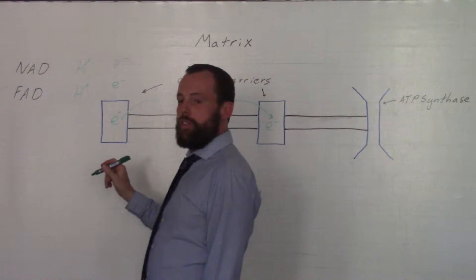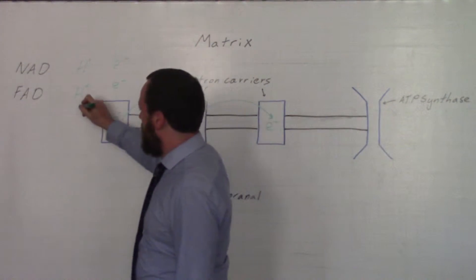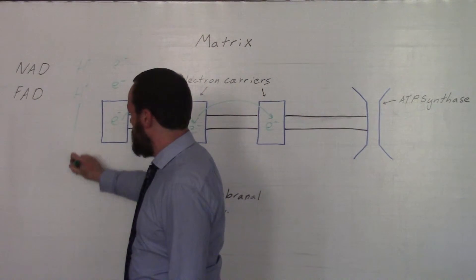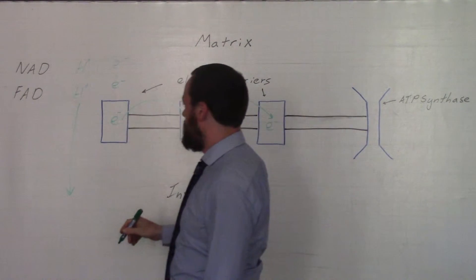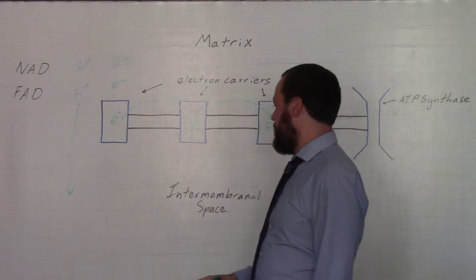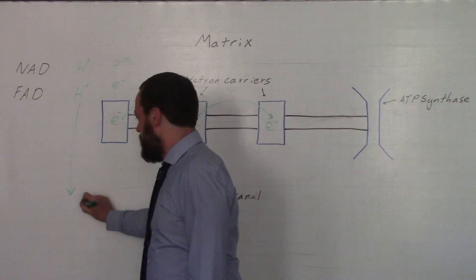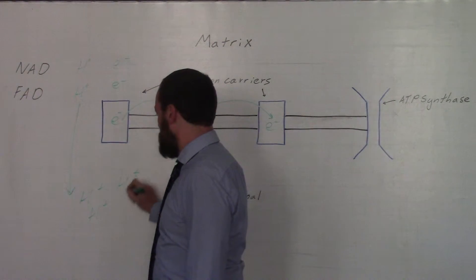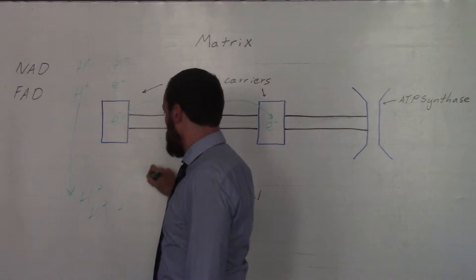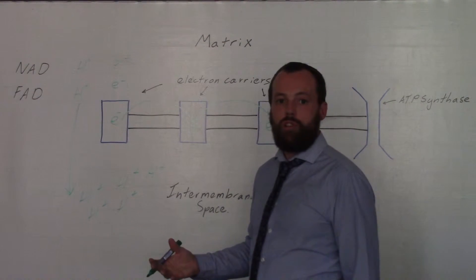The H+ ions are moved from the matrix across the membrane into the intermembranal space via active transport. In doing so, this creates a chemiosmotic gradient—an electrochemical gradient, a concentration gradient.